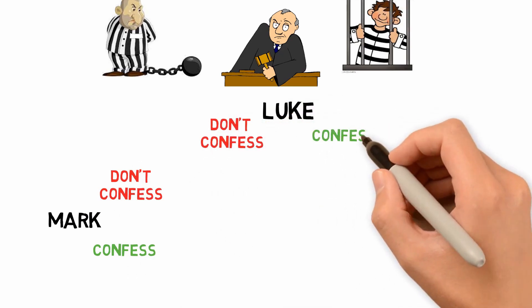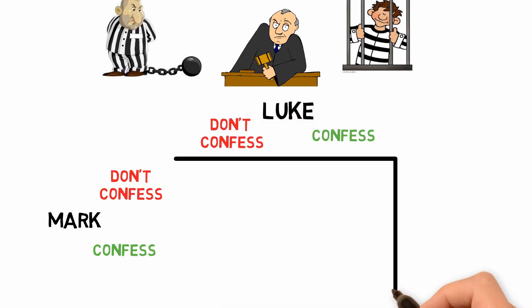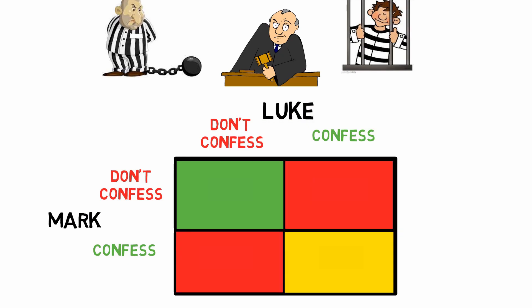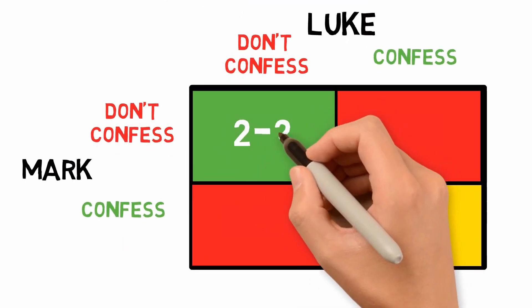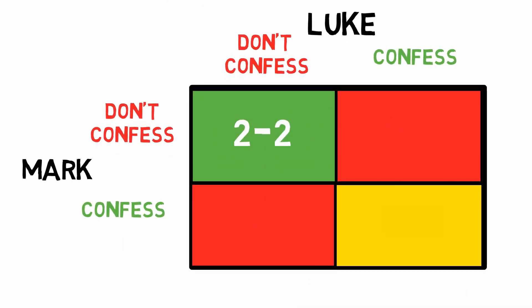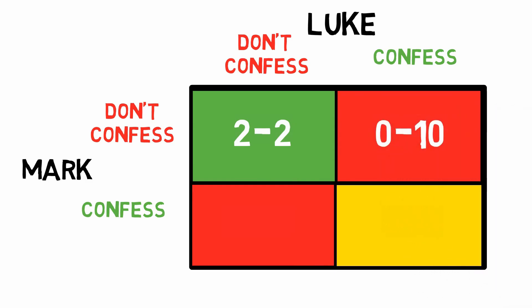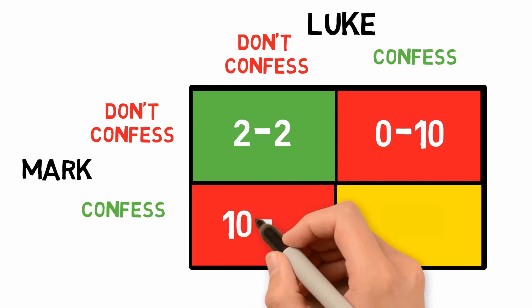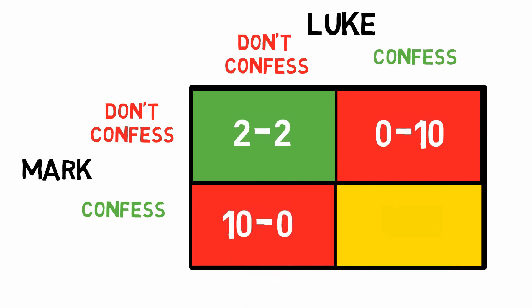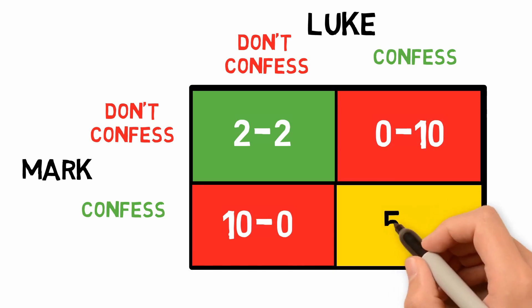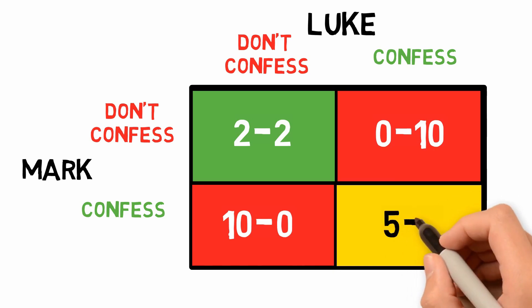The police present each arrestee with three options. Option 1: neither confesses, and each spends two years in prison. Option 2: if one of them confesses but the other does not, the one who confesses will be released immediately, but his partner will be sentenced to 10 years in prison. Option 3: if both confess, they'll each receive a five-year prison sentence.